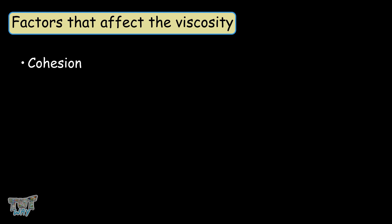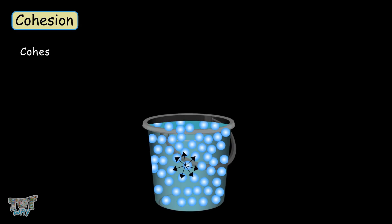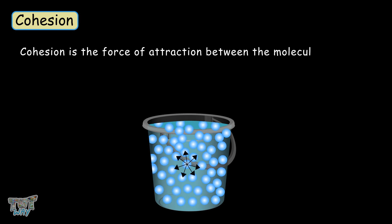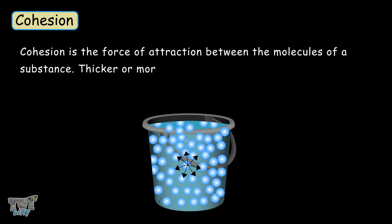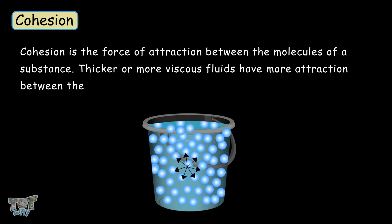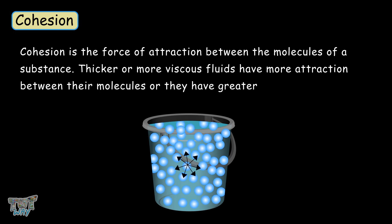Now let's learn the two factors that affect the viscosity of a liquid: cohesion and adhesion. Cohesion is the force of attraction between the molecules of a substance. Thicker or more viscous fluids have more attraction between their molecules, or they have greater cohesion.